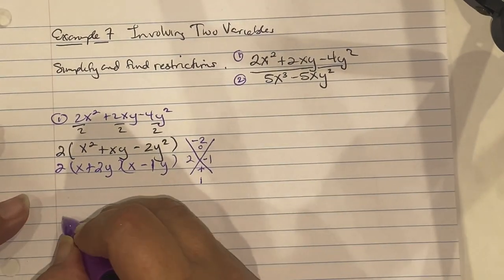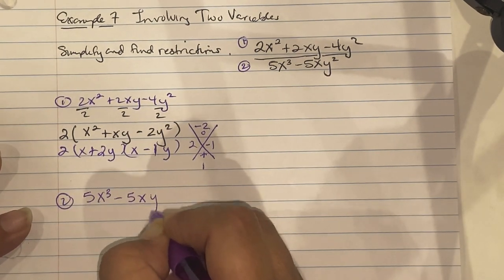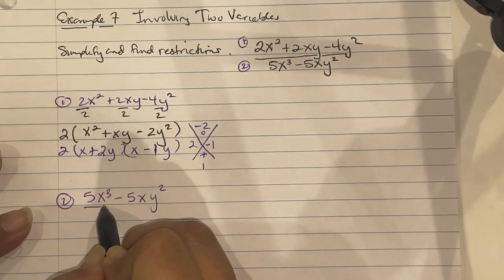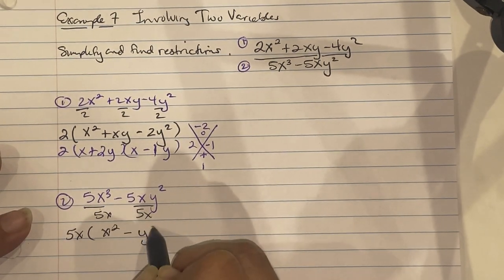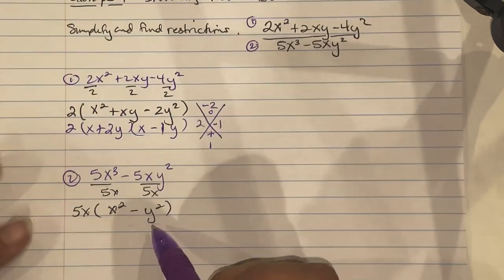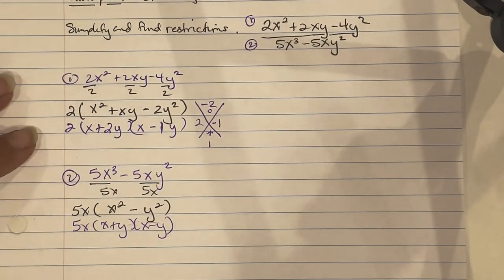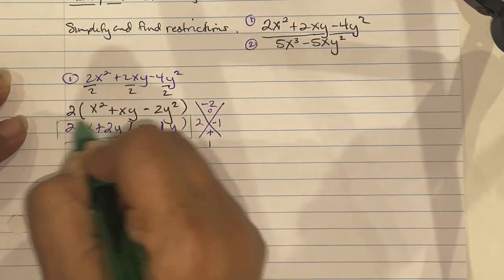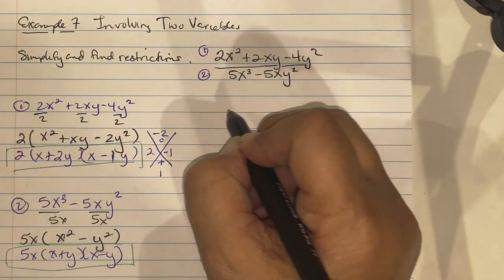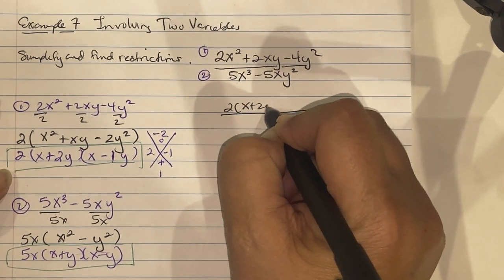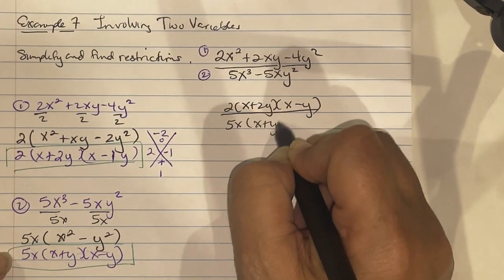For the denominator, 5x cubed minus 5xy squared: both terms share 5x, so factor out 5x to get x squared minus y squared, which is a difference of squares giving x plus y times x minus y. So the denominator is 5x times x plus y times x minus y.